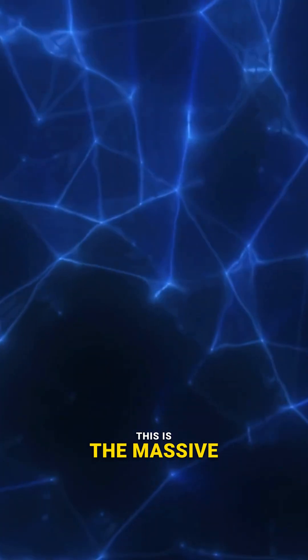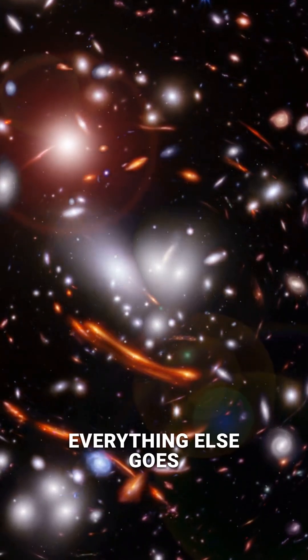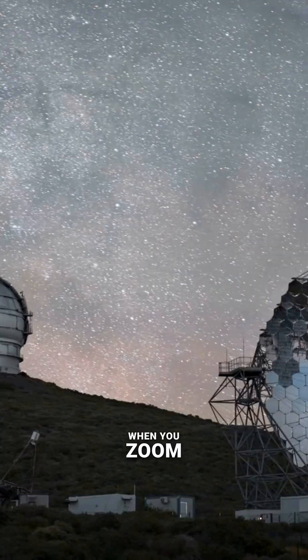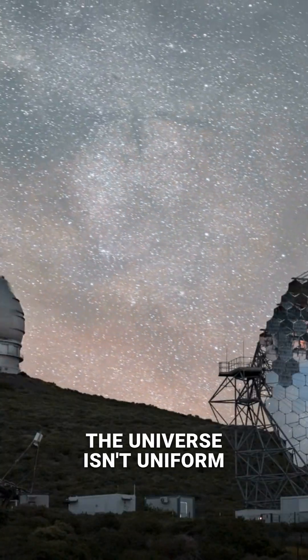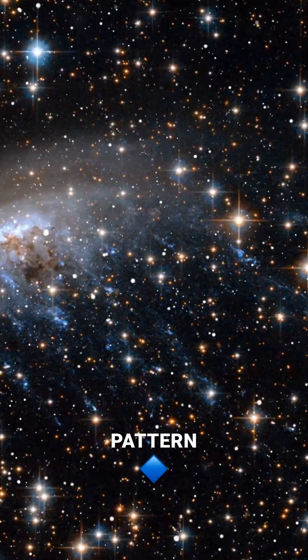This is the massive, sponge-like skeleton of the universe, and it determines where everything else goes. Forget individual stars and galaxies for a second. When you zoom out, the universe isn't uniform and smooth. It's organized into an incredible three-dimensional pattern.